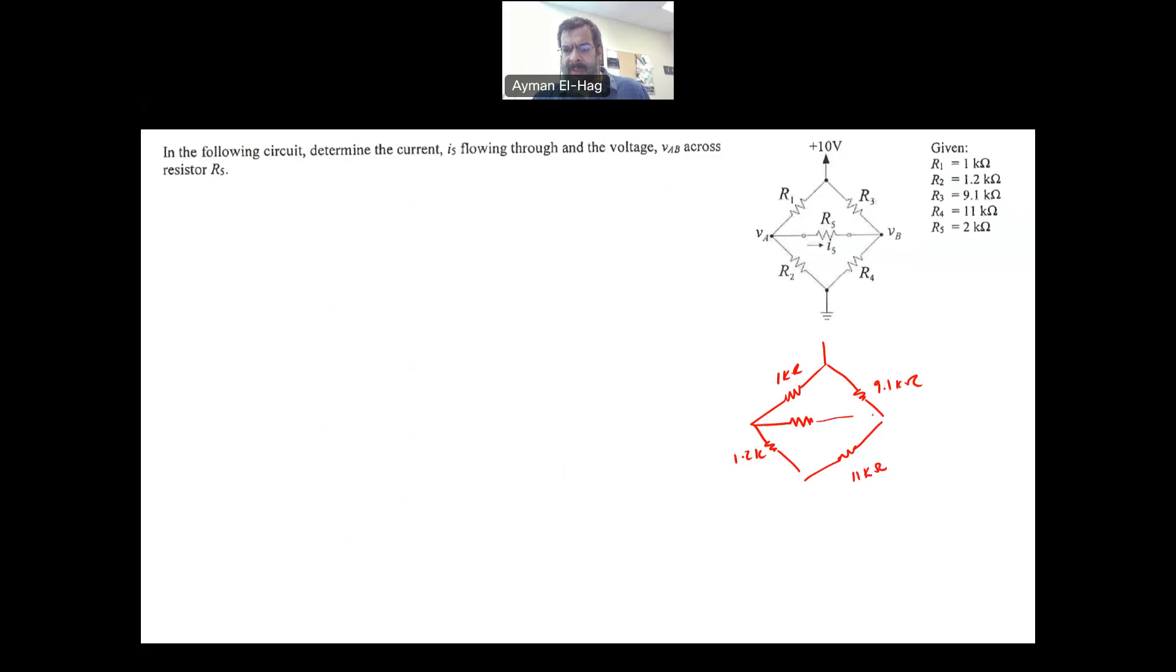In between, there is a resistance equal to 2 kΩ. Our interest is to find this I5. And here we will have a voltage supply which is equal to 10 volts. And we have here VA and this is VB. So what is I between VA and VB?